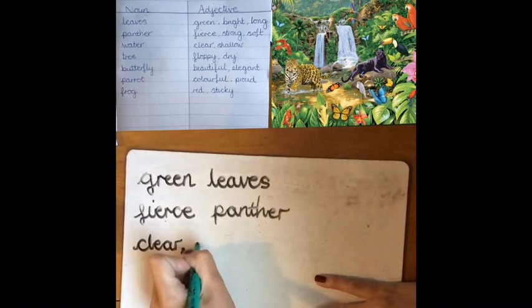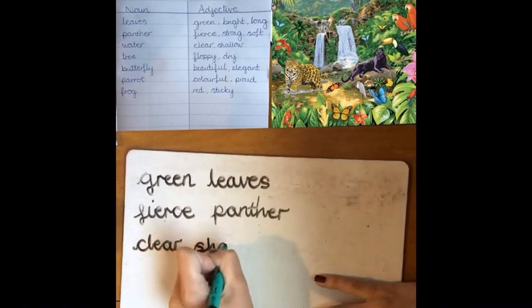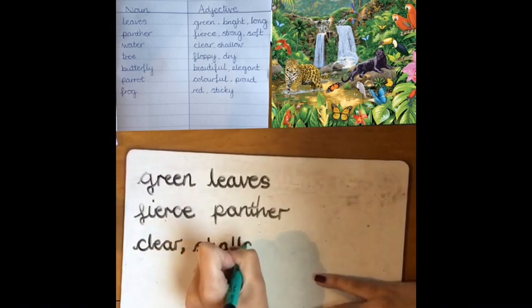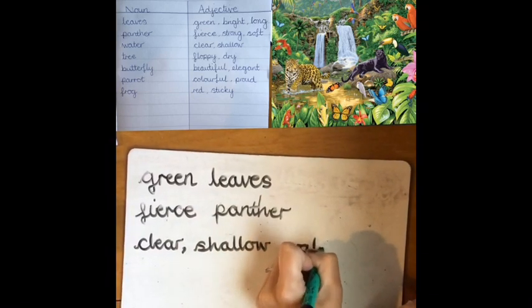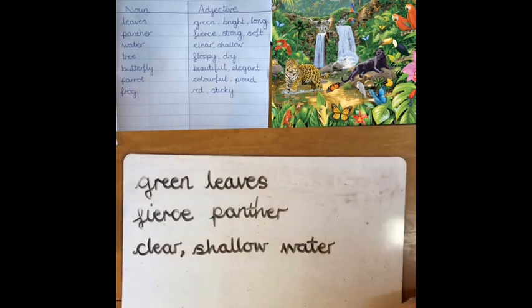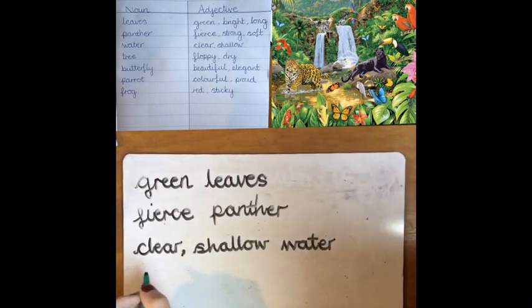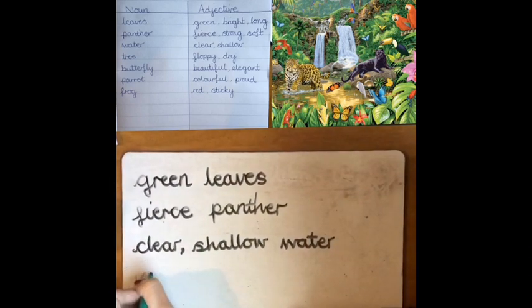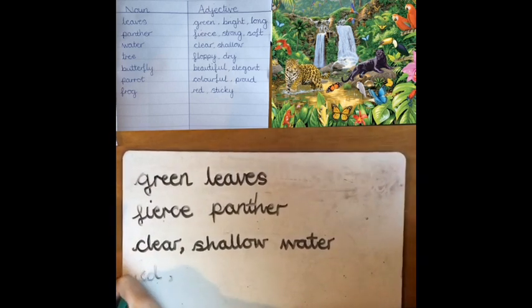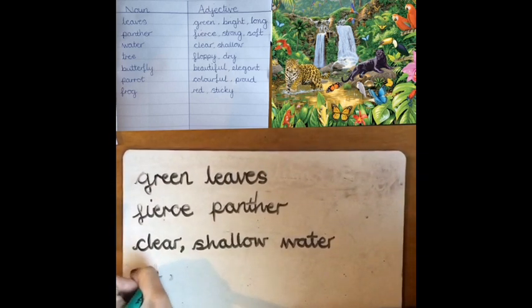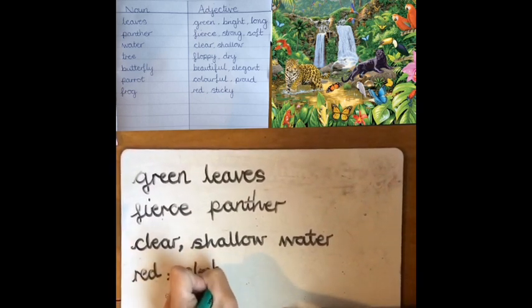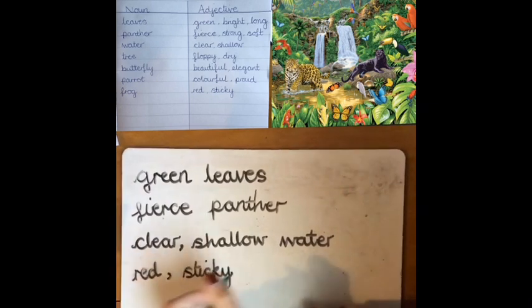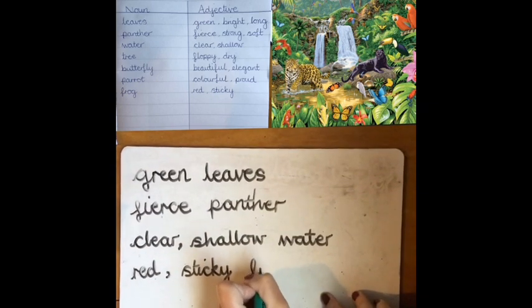If you want an extra challenge, you can choose an adjective and then another adjective and then a noun — that will make it into an expanded noun phrase. So: clear, shallow, water. I've separated my adjectives with a comma there. I'm going to do one more: red, sticky, frog. So if you want that extra challenge, choose two adjectives and you're making them into an expanded noun phrase.